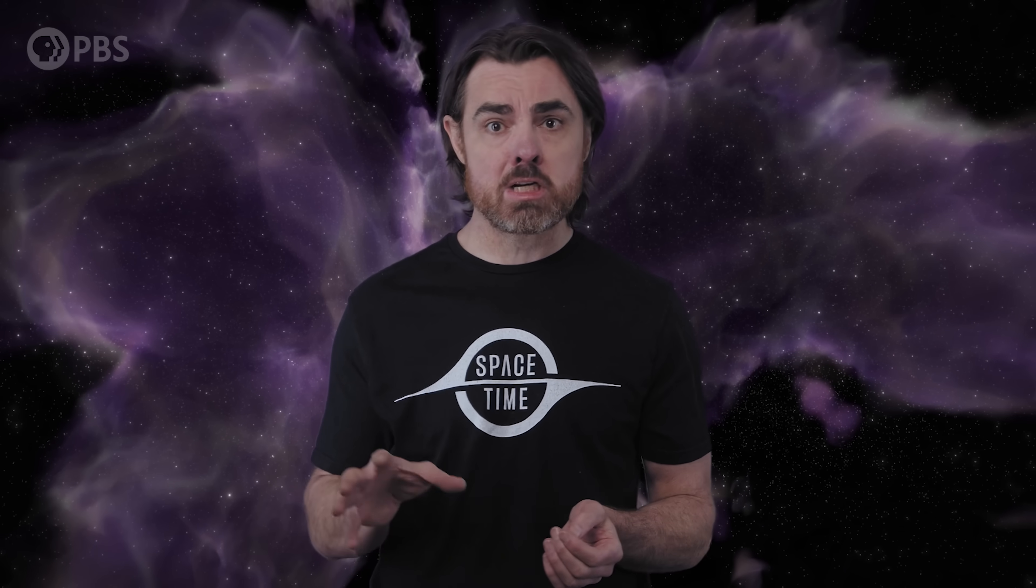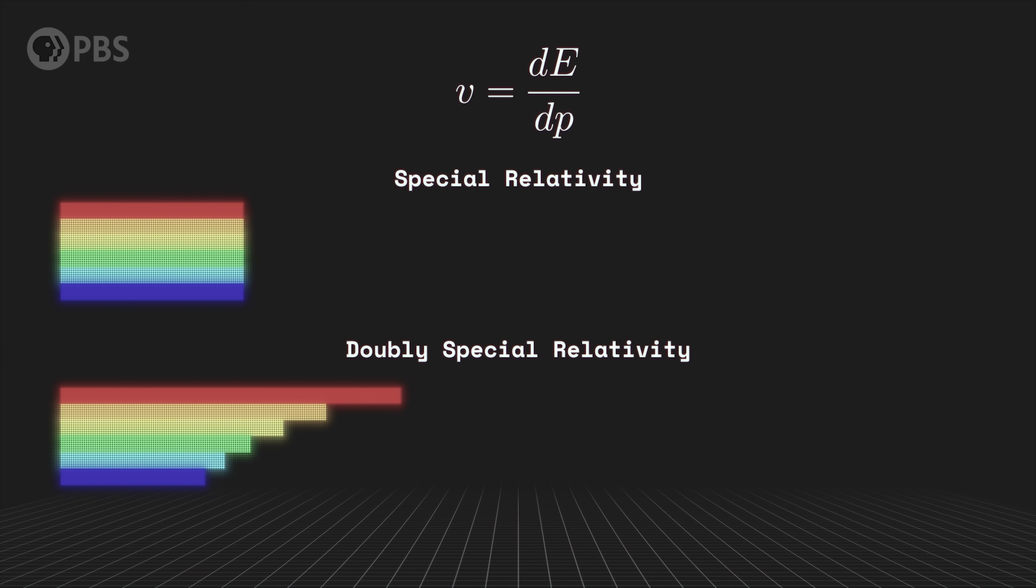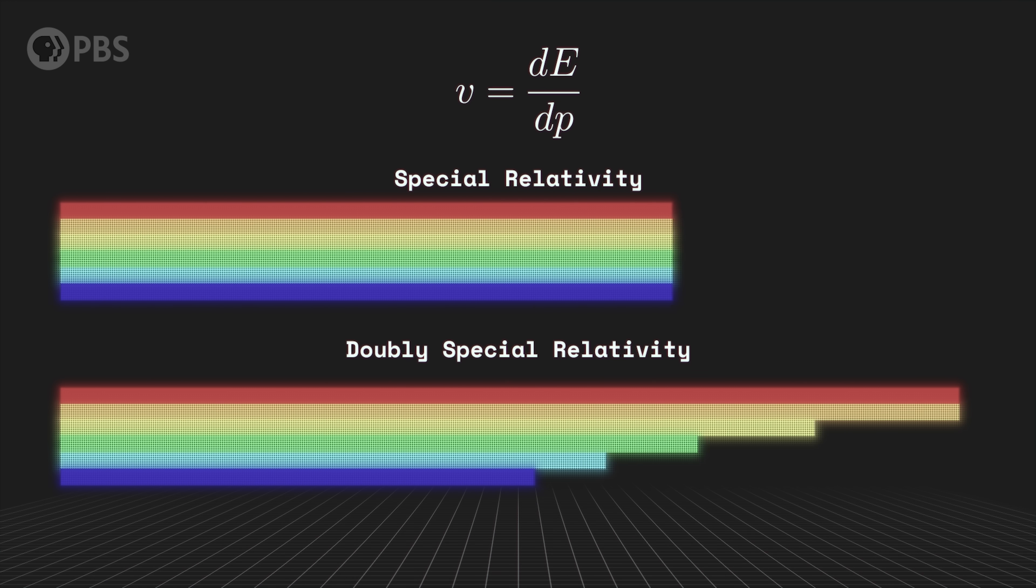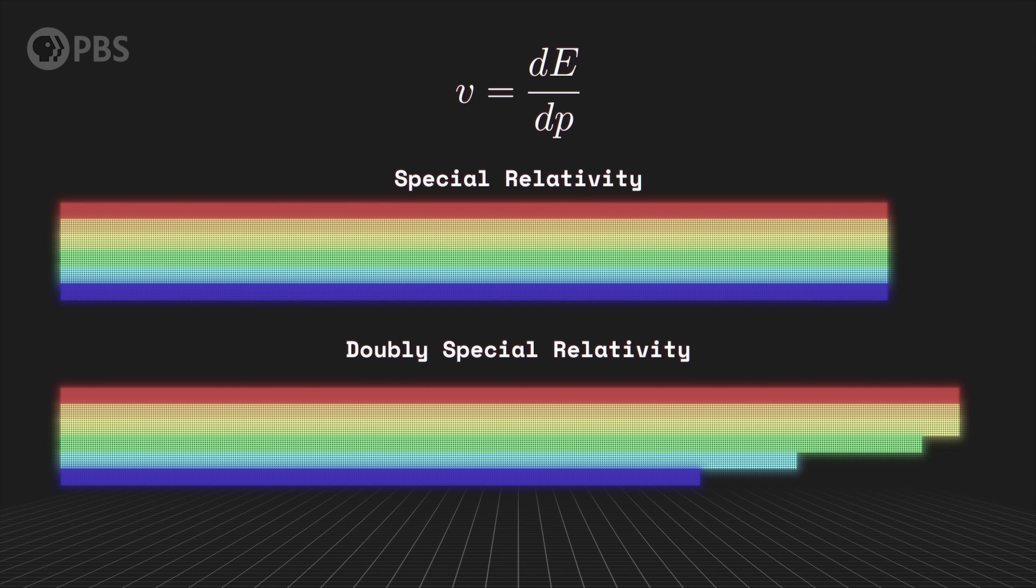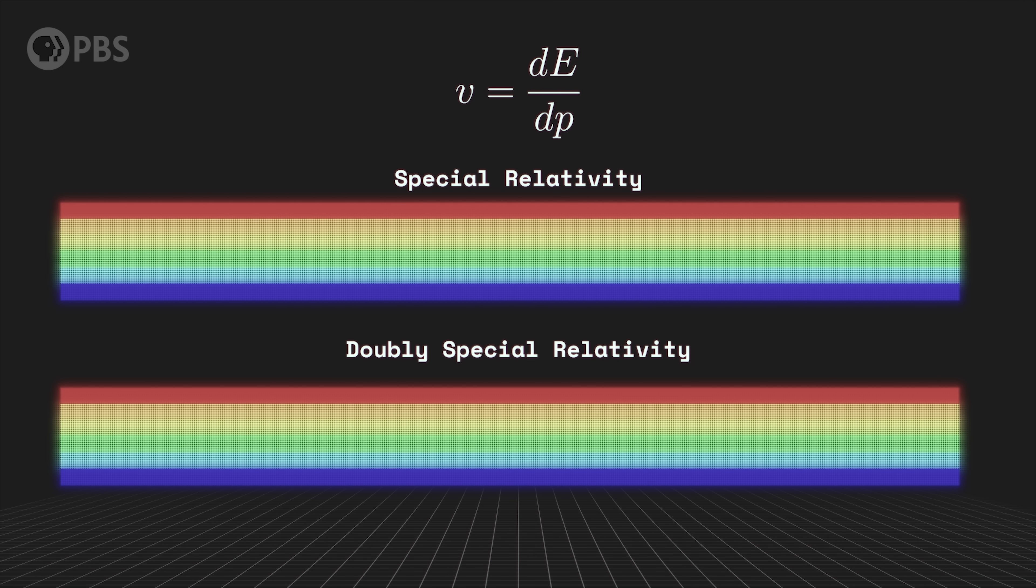Another hotly debated prediction from some DSR theories is that the speed of light might actually be different depending on the wavelength of that light, and hence its energy. But why should fixing the Planck length or Planck energy cause the speed of light to vary? Well, one way to express the speed of light, or anything really, is the ratio of kinetic energy to momentum. But in our modified dispersion relation, energy has these extra bits to it. At very high energies, those extra bits become important and cause the energy-momentum ratio to deviate from C. So if this ratio really defines the speed of light, then we have a way to change that speed at extreme energies. Whether high energy photons move faster or slower than low energy ones depends on the nature of the modified dispersion relation being considered, but either way, this can potentially be tested.